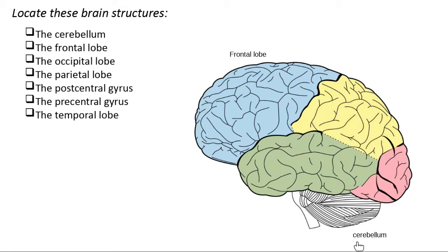I want to do a quick plug for your current events in anatomy. There are a couple of articles in that database about a woman who didn't find out until she was in her 20s that she didn't actually have a cerebellum. If you're interested in finding out what life would be like without a cerebellum, check that out in the current events in anatomy article library. It goes to show you that it's not something you need to stay alive, but it is something that can have a big enough effect that eventually we can figure out you don't have it.